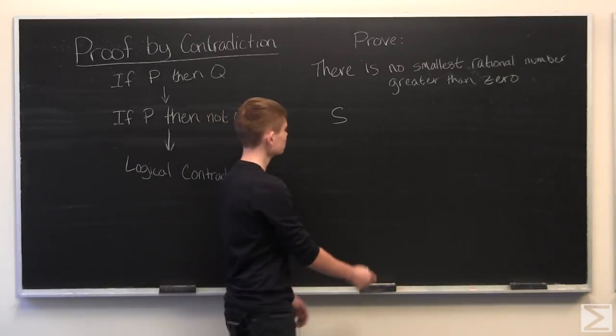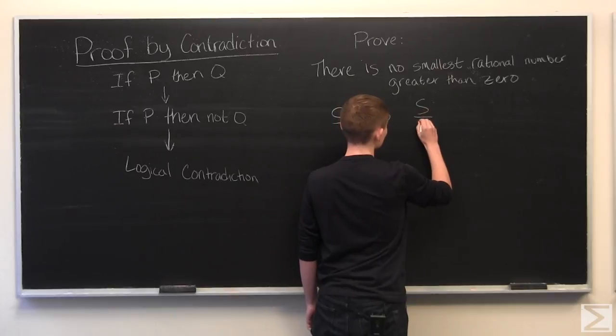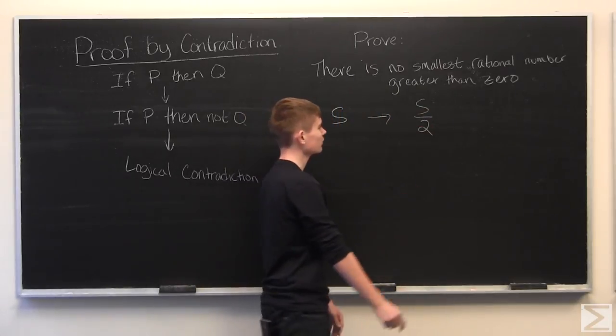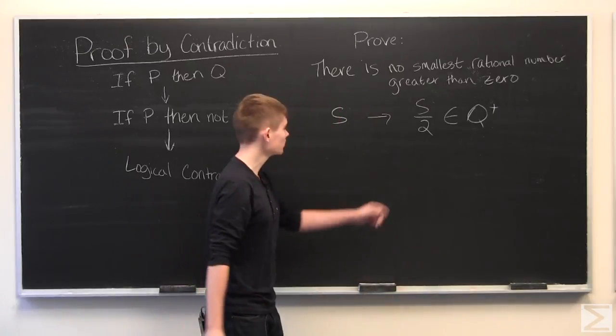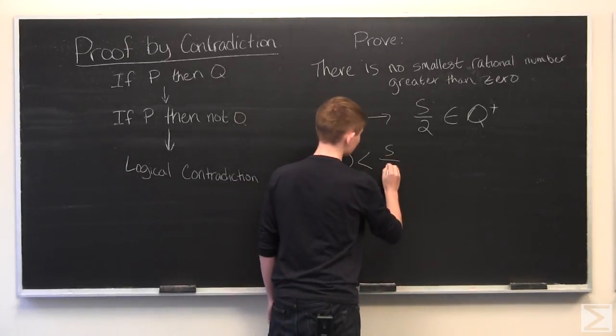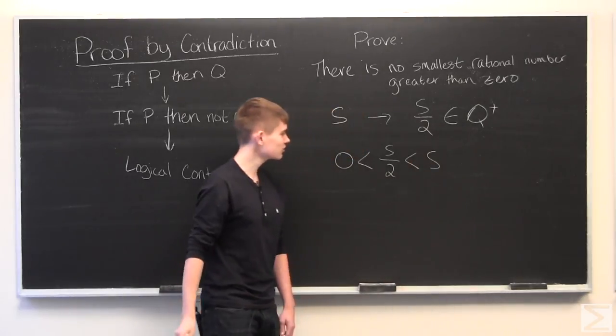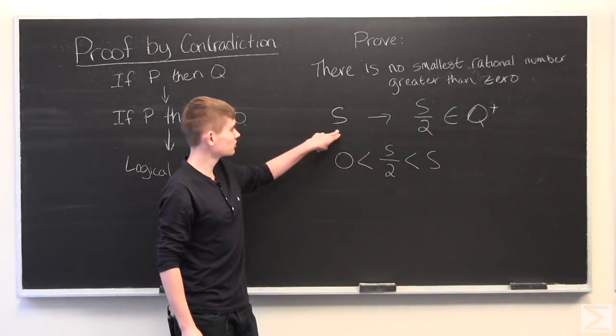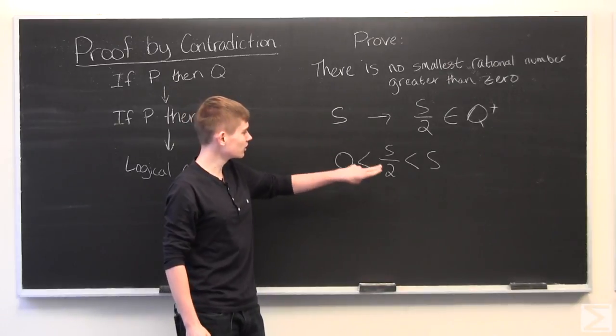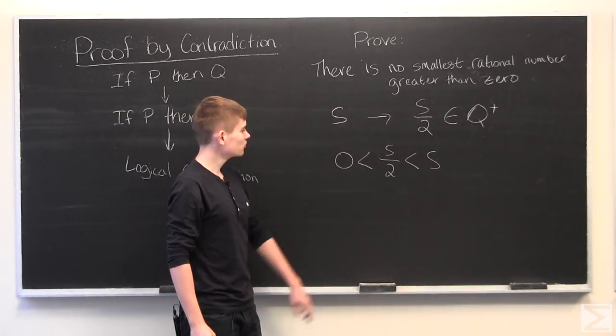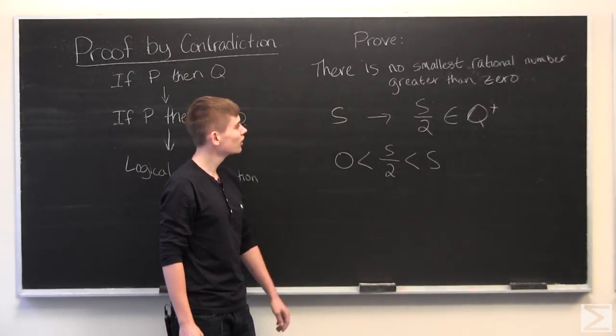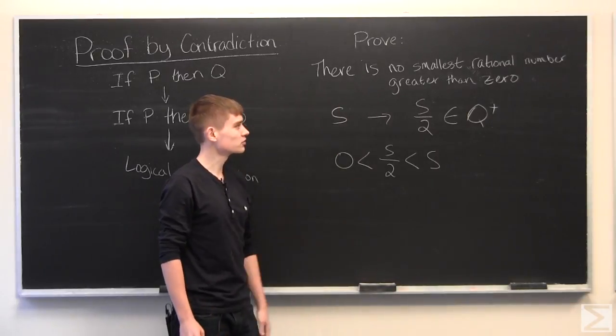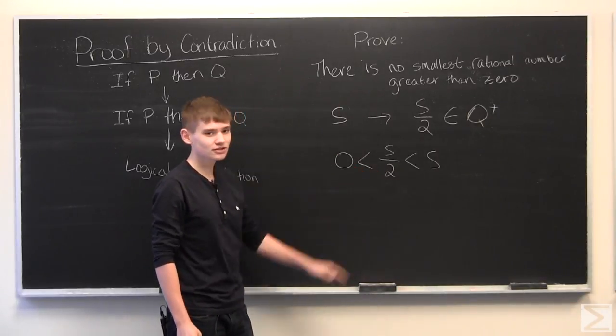What we're going to do is divide it by two. Since this is written as a fraction, this is clearly within the positive rational numbers, and we have zero less than S over two less than S. Therefore, we have started with the supposed smallest rational number and got a smaller rational number, which contradicts the fact that S is the smallest rational number greater than zero. We have therefore proven that there is no smallest rational number, because you can just keep doing this and getting smaller and smaller.